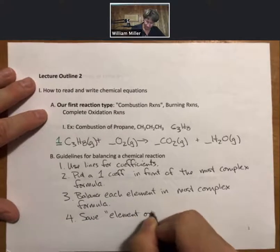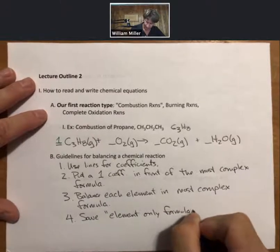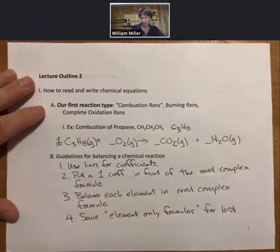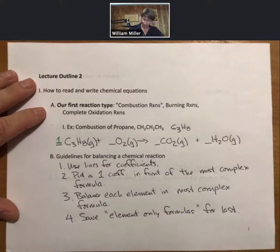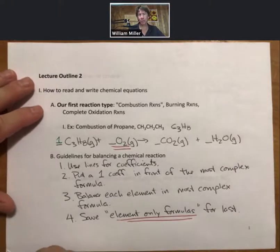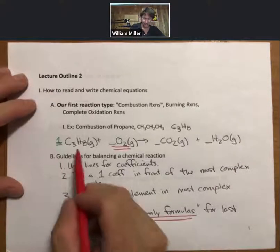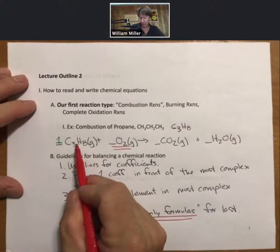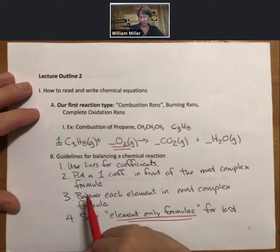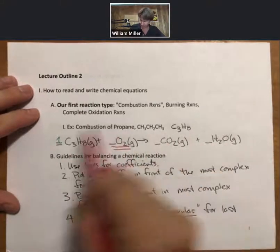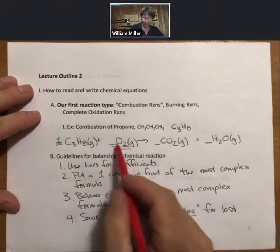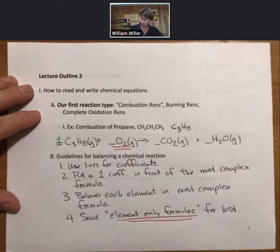And I'll use quotes around this. Elements only formulas. So if there was oxygen in this compound, oxygen is an elements only formula. Here's a molecule or a compound. Molecule compounds. Same for H2O. The reason you save oxygen for last is whatever happens to the oxygens in the other places, you can always make it balanced by adding whatever number you need here.